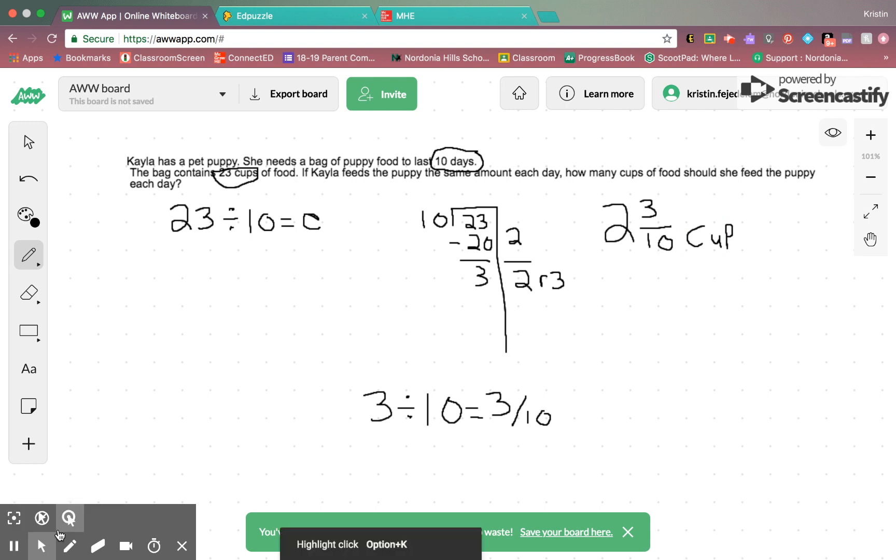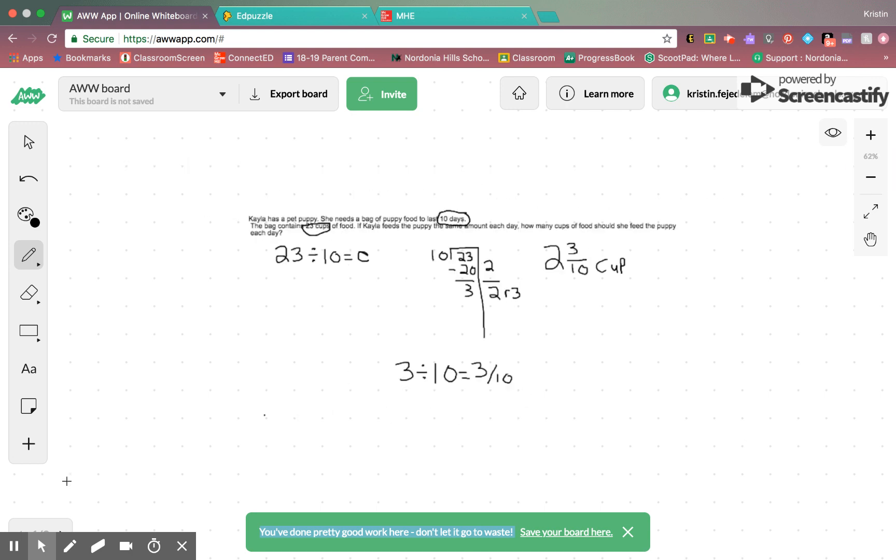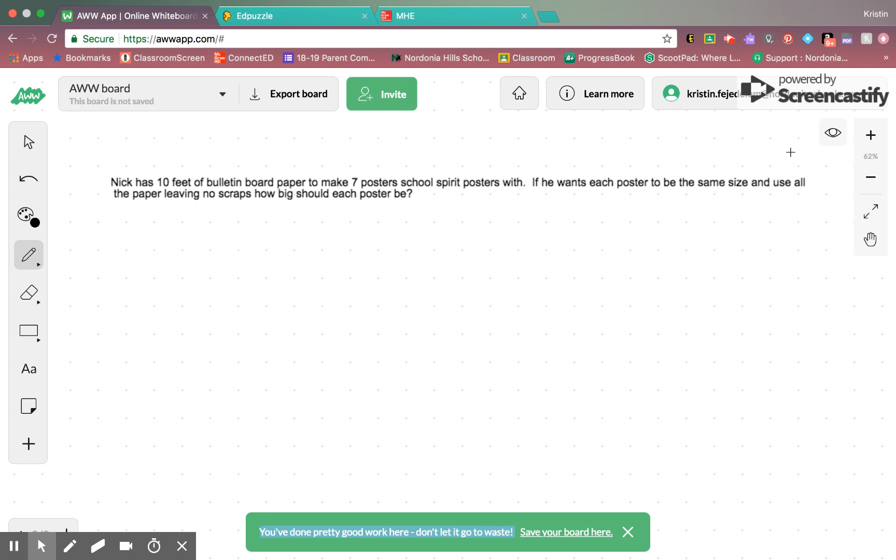Let's try another one. Okay, so, if Nick has 10 feet of bulletin board paper to make seven posters, school spirit posters, if he wanted each poster to be the same size and use all the paper, leaving no scraps, how big should the poster be?